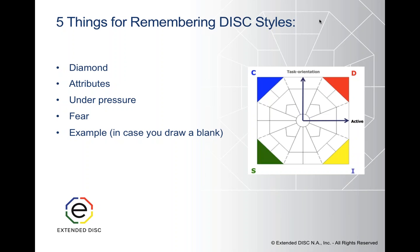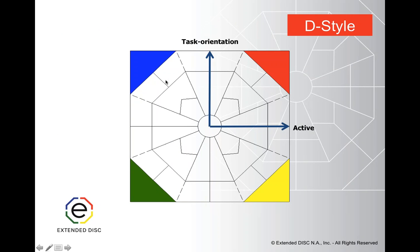Is there someone you know — famous or just someone in your professional or personal life — that reminds you of the attributes of this style in case you draw a blank? So let's start with the D style. D styles are task-oriented and active. If I had to summarize a D style, they're all about accomplishments — focused on tasks and getting it done, especially their own. They want to get from point A to point B as quickly as possible.